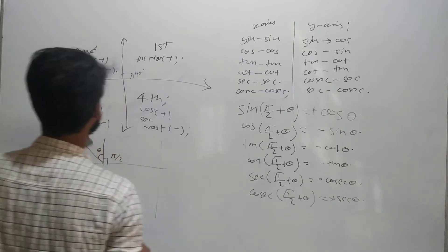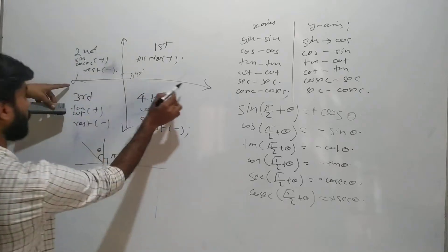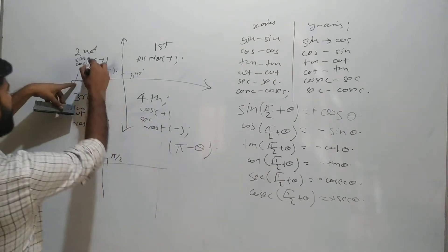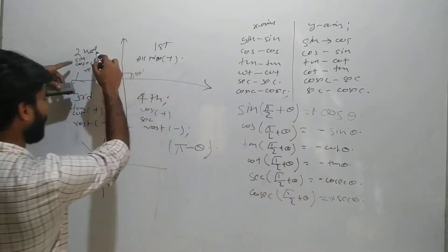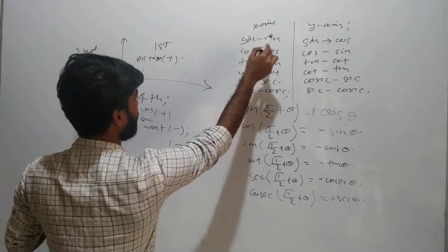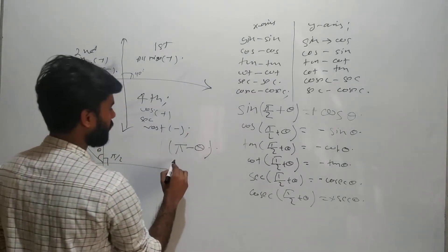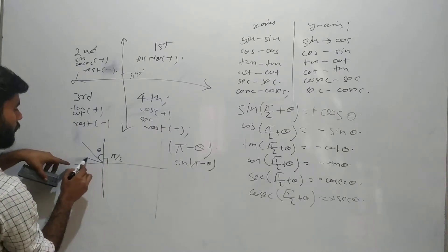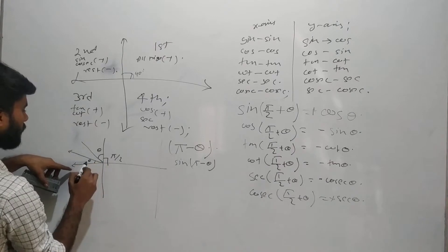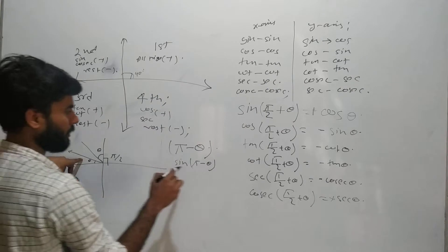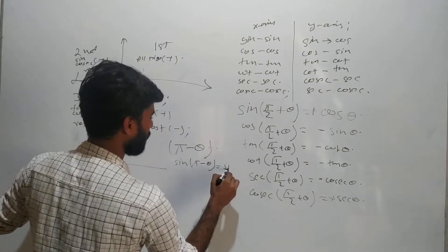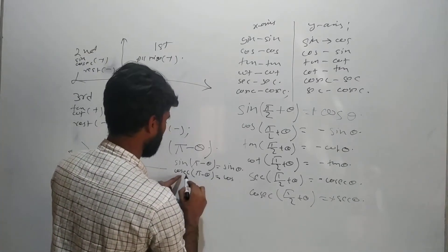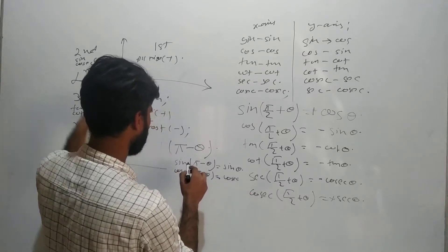Now for π − θ: if we reduce some angle from 180° (that is, π), we get π − θ, which is still in the second quadrant. For the x-axis (related to π), the trigonometric ratio names remain the same. So sine(π − θ) = sine θ, and this is positive because it is the second quadrant. Cosec(π − θ) = cosec θ, also positive as it is the reciprocal of sine.